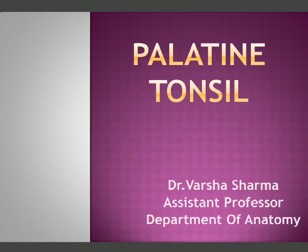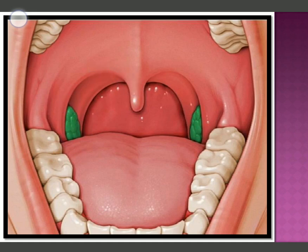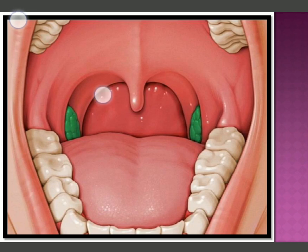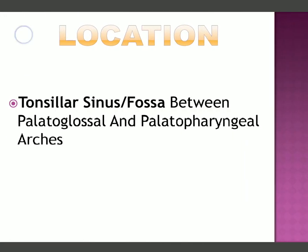Good morning students. Today we will discuss the anatomy of the palatine tonsil. In this image you can see the oral cavity, the soft palate, the uvula, and the tongue. There are two arches: the palatoglossal arch, connected on one side to the palate and on the other to the tongue, and behind it the palatopharyngeal arch. In between these two arches there is a fossa known as the tonsillar fossa, in which the palatine tonsils are located on both sides.